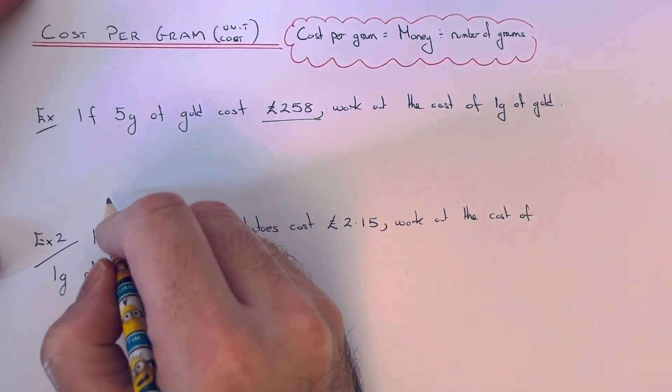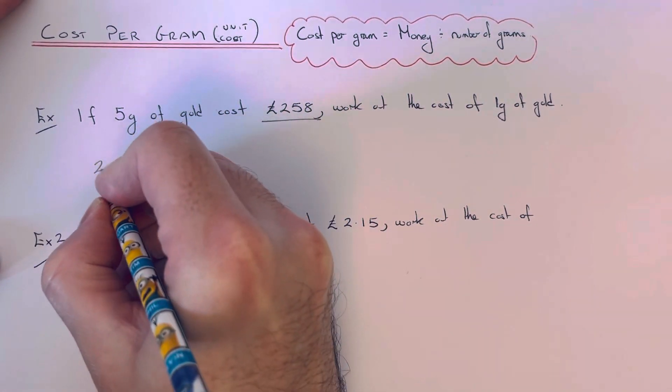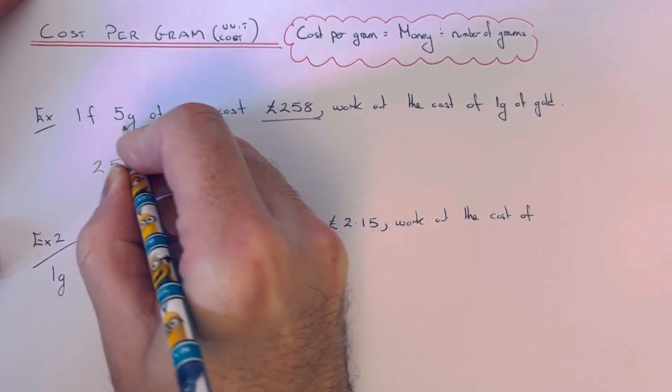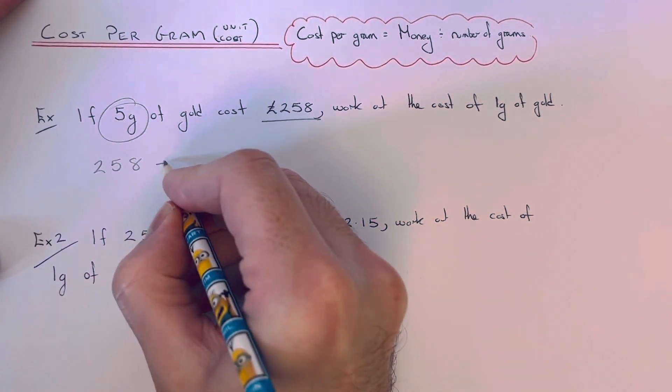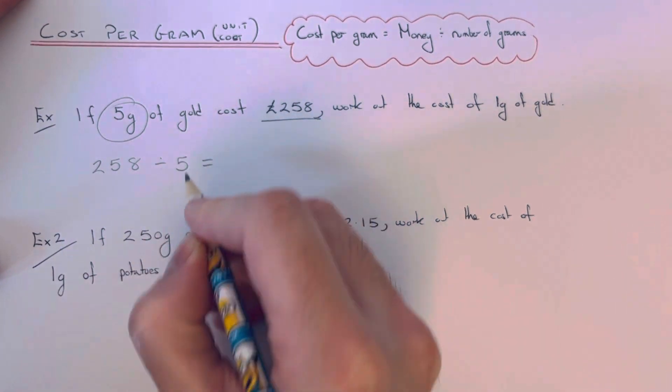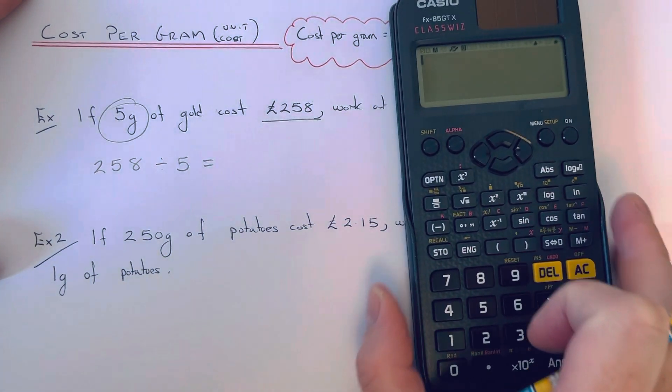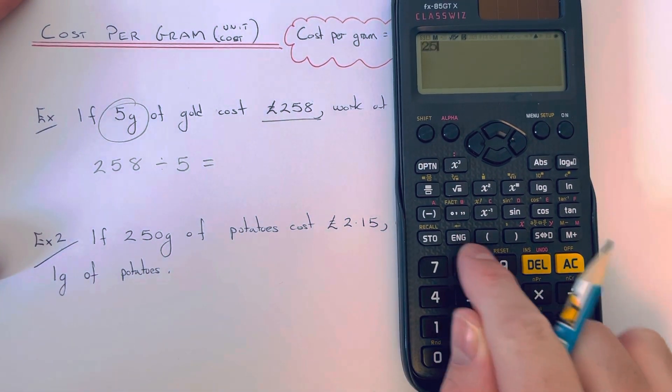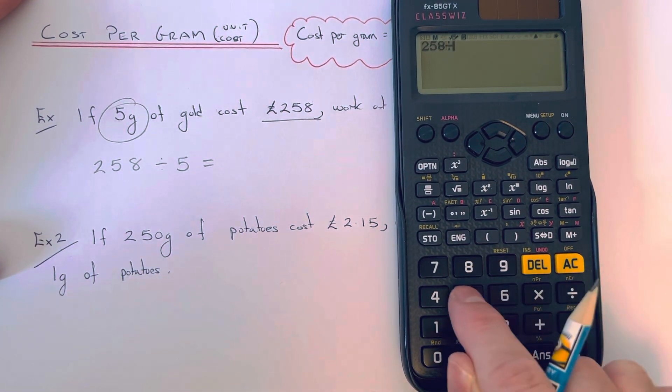So we take our money, which is £258, and we divide that by how many grams we are buying. If we get our calculator, we do 258 divided by 5.